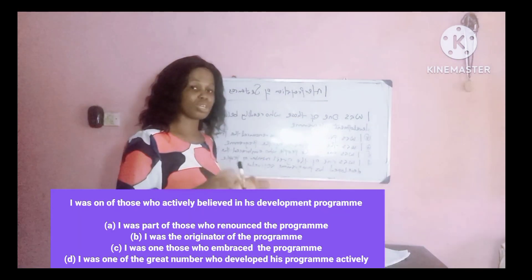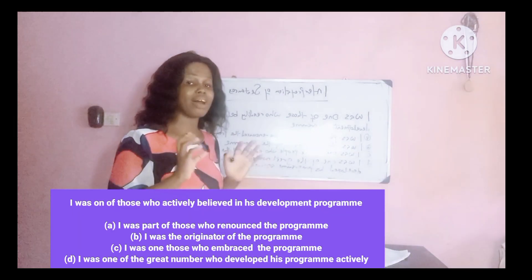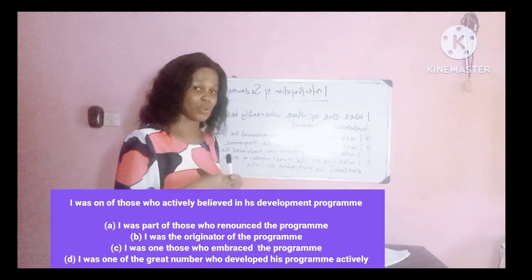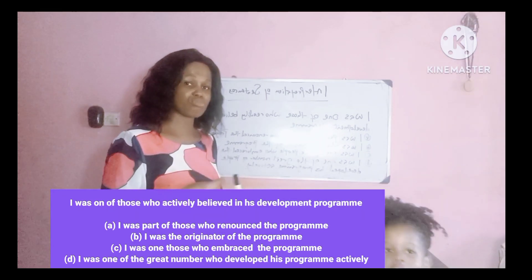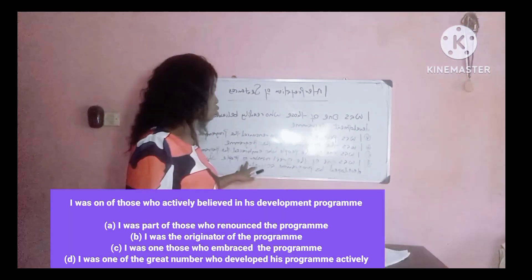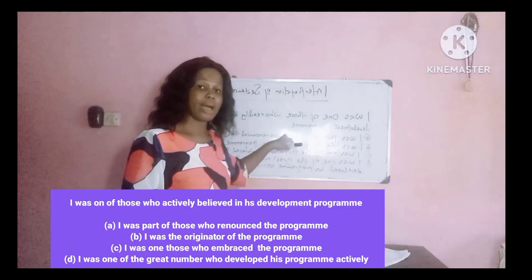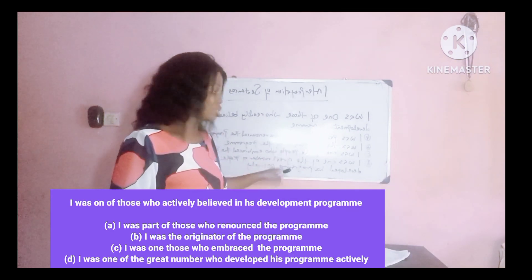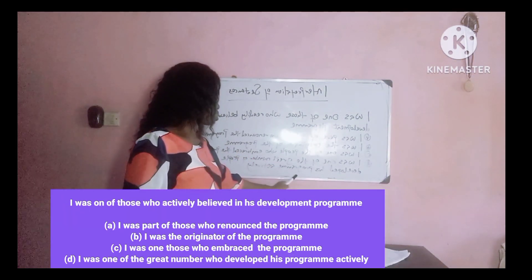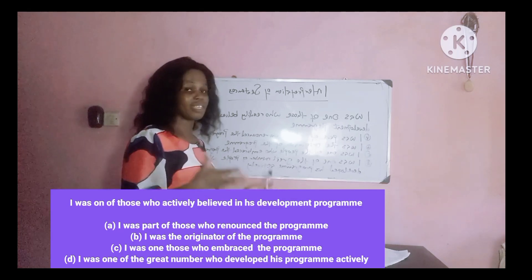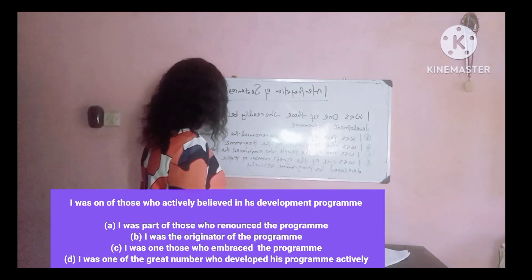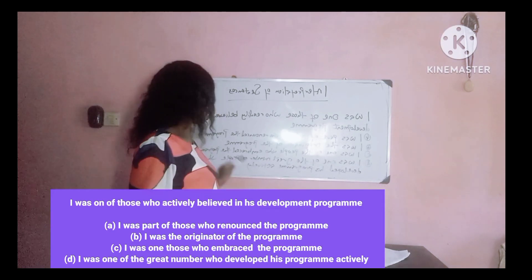You should not rush selecting your answer. Don't rush selecting your answer. Try to understand the statement very well, and you can also try to rephrase the statement — it helps you to quickly select the right option. Option D, 'I was one of the greatest number of people who developed this program actively,' is not the correct answer. So the correct answer is option C.